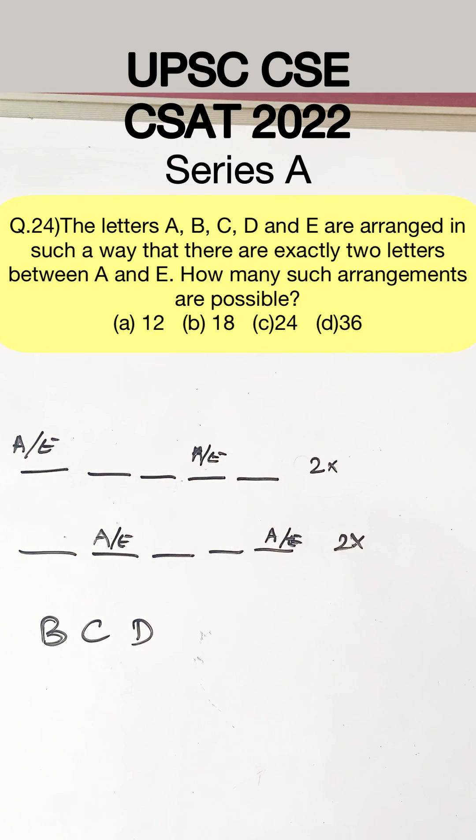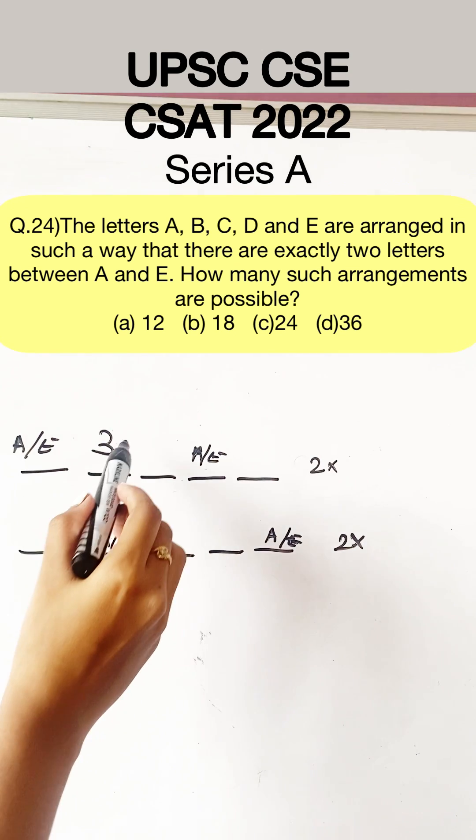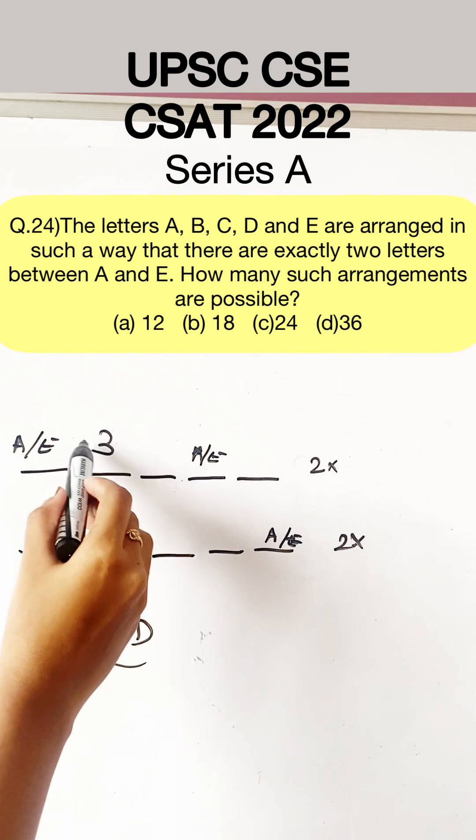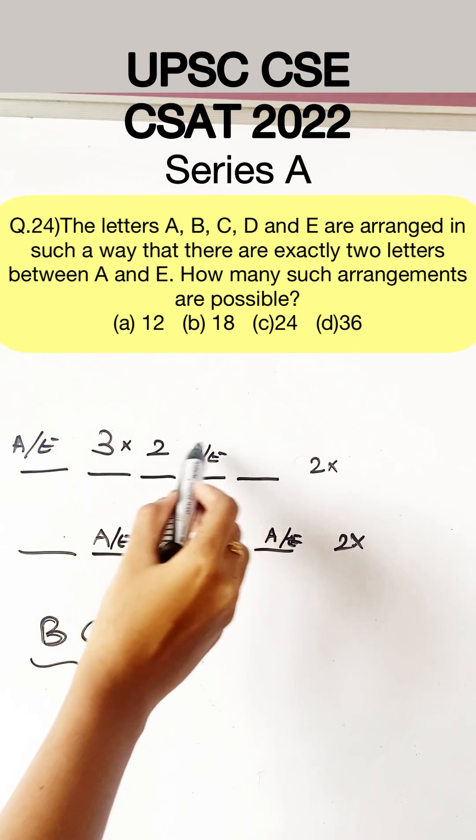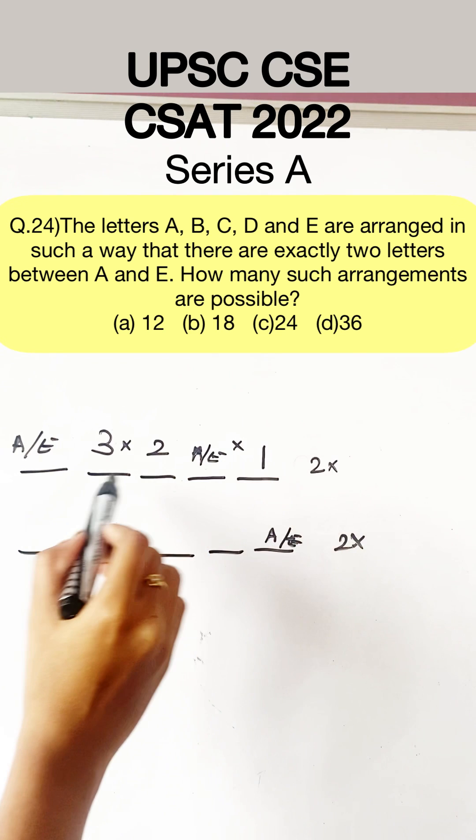So the remaining three blank positions can be occupied only by B, C and D. This place will be occupied by B, C or D—there are three possibilities. This position can be occupied by two possibilities and this by one.